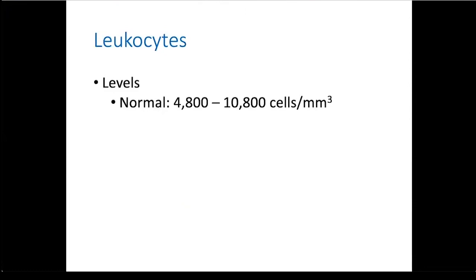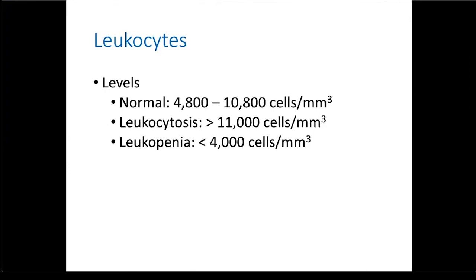Now let's look at leukocytes or white blood cells. There are many different types of leukocytes, and they will be used to protect you against pathogens, abnormal cells such as cancer, or foreign cells. A normal range or level for leukocytes in your blood is between 4,800 to 10,800 cells per millimeter cubed of blood. Elevated levels above 11,000 cells per millimeter cubed is called leukocytosis. And decreased levels below 4,000 cells per millimeter cubed is called leukopenia.